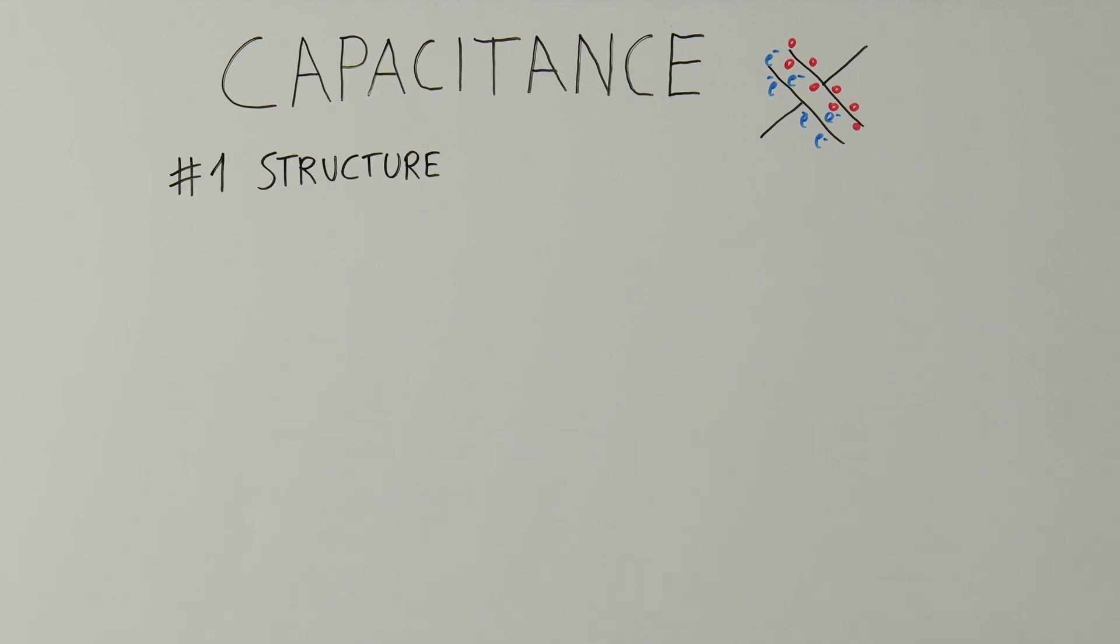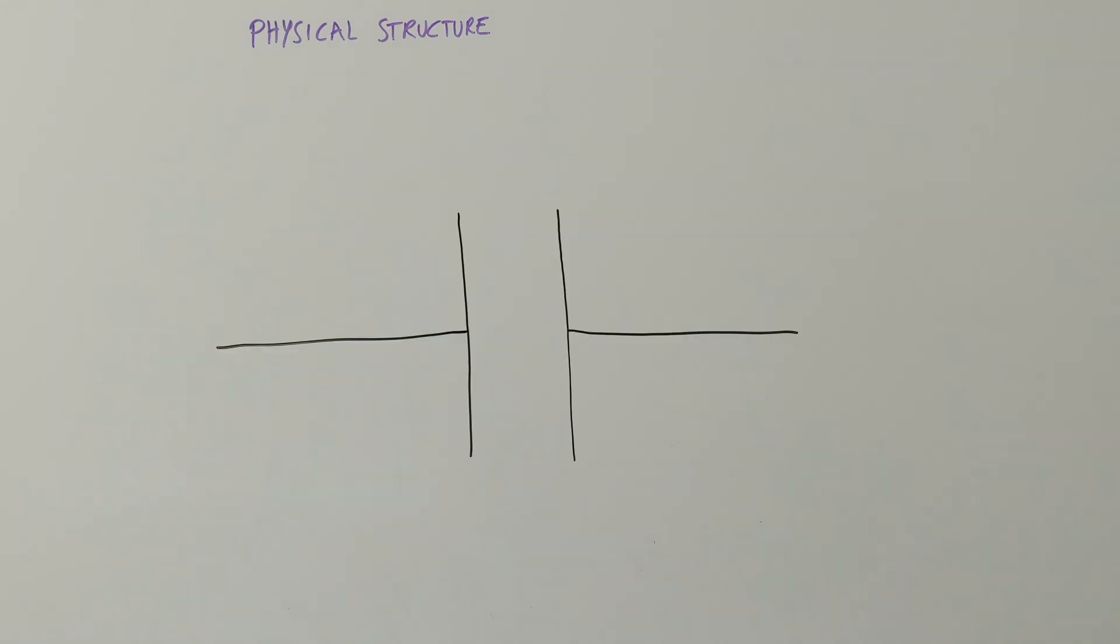First, let's examine the schematic symbol of the capacitor. There are primarily two different symbols used. One indicates a capacitor that can be used bidirectionally, while the other signifies a polarized capacitor, which can only be used in one direction. The symbol represents its physical structure well, as every capacitor consists of two plates with a certain distance from each other.